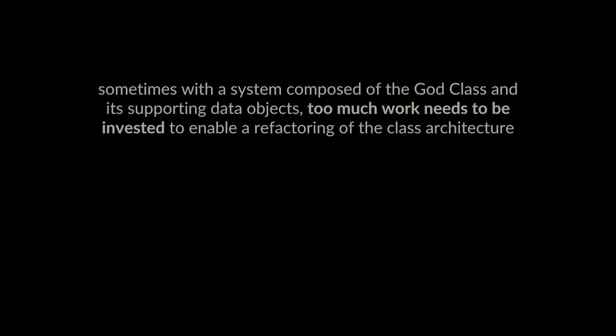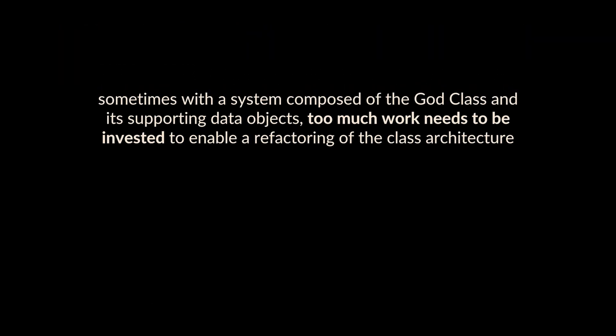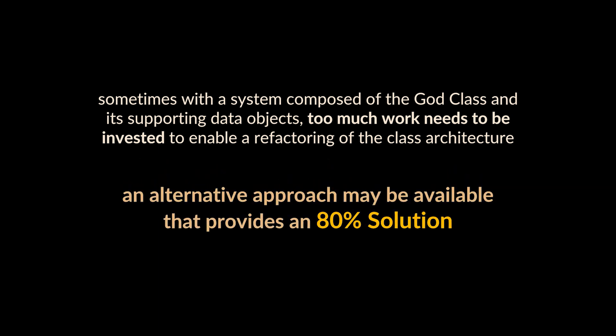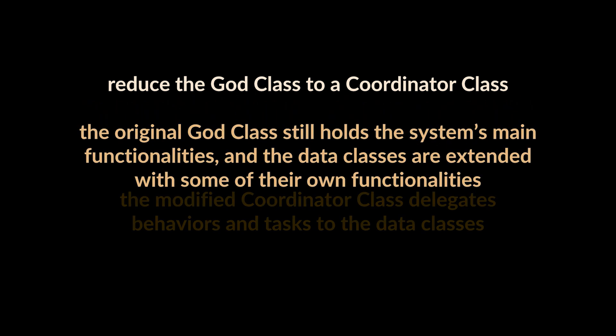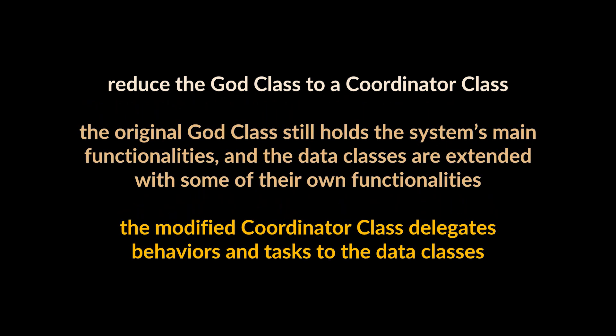Sometimes, with a system composed of the God Class and its supporting data objects, too much work needs to be invested to enable a full refactoring of the class architecture. An alternative approach may be available that provides an 80% solution. Instead of a bottom-up refactoring of the entire class hierarchy, it may be possible to reduce this big class from a controller or manager of the whole business logic to a coordinator class. In a coordinator class, the original God Class manages the system's functionalities, and the data classes are extended with some of their own functionalities which operate in the direction of the modified coordinator class.